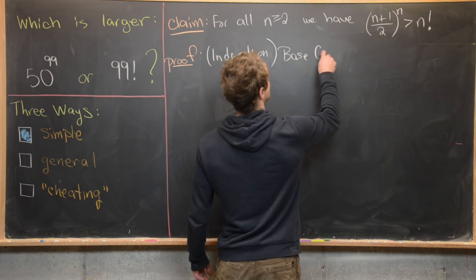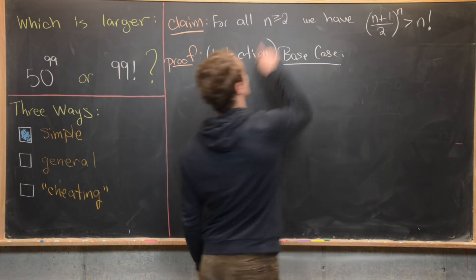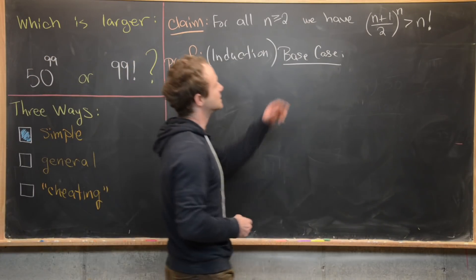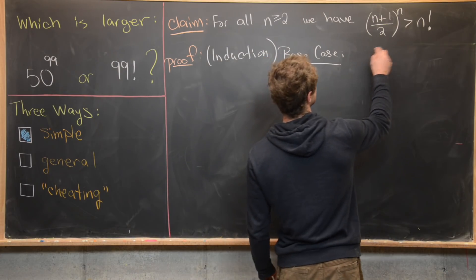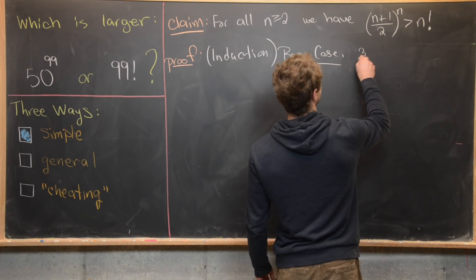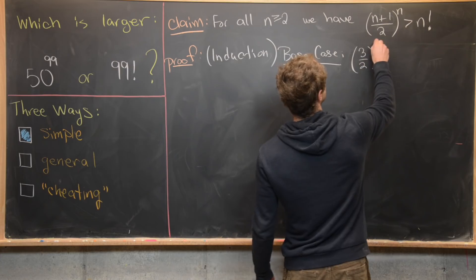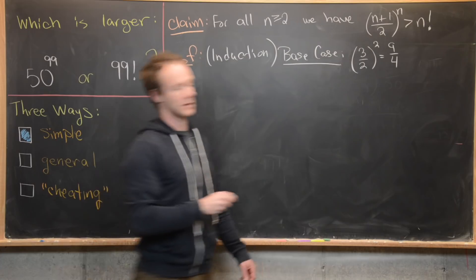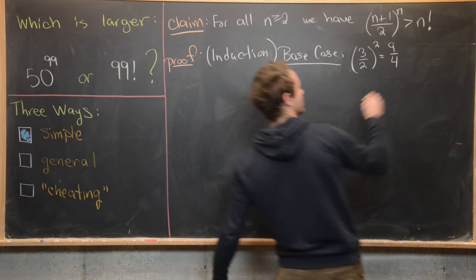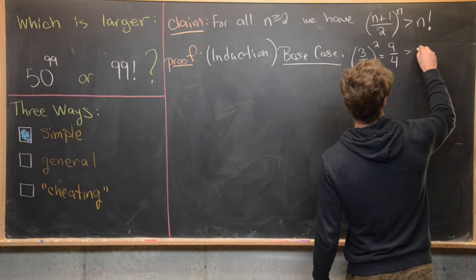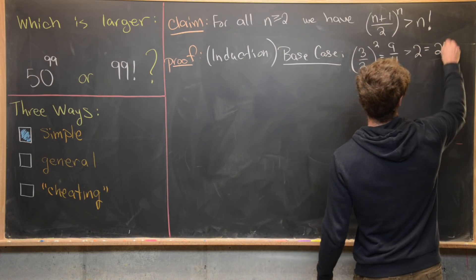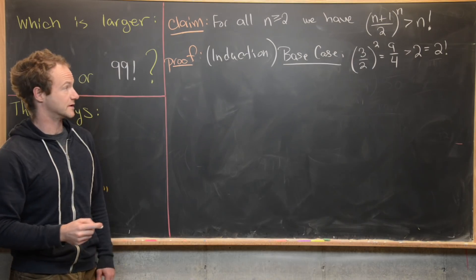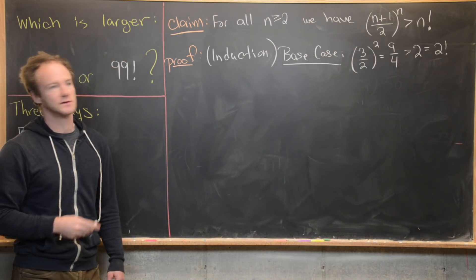The first step is to prove a base case. Since we're starting at n equals 2, our base case is n equals 2. Plugging in, we get (3/2) squared, which equals 9/4. And 9/4 is most definitely bigger than 2, which equals 2 factorial — because 9 is bigger than 8 and 8 over 4 is 2. So our base case holds.